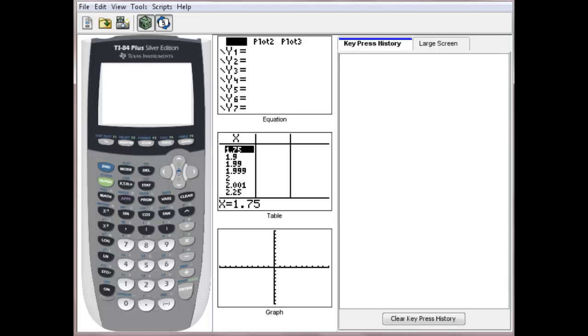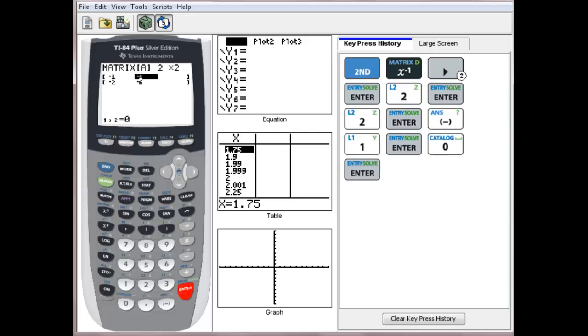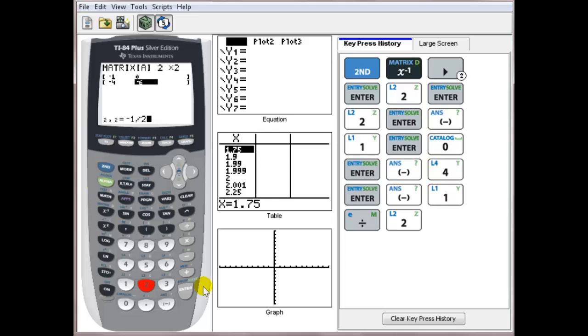Now on our calculator, we're going to input that matrix. We're going to go to 2nd, x to the negative 1. Go over to edit, edit A. We have a 2 by 2 matrix. Put in your numbers that are in your matrix. Remember we do fractions by saying 1 divided by 2.